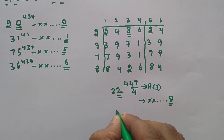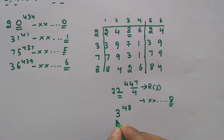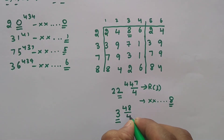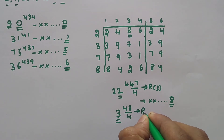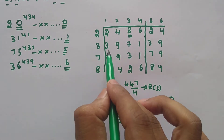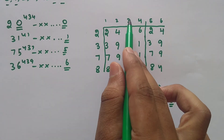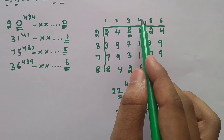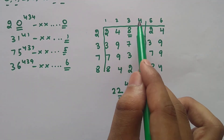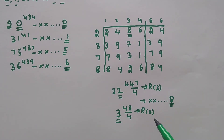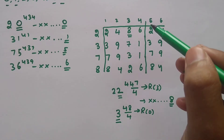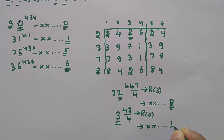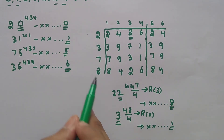Next example: 3 power 48. The last digit is 3 and the cyclicity is 4, so divide the last two digits of the power by 4: 48 ÷ 4 gives remainder 0. When remainder is 1 the last digit is 3; remainder 2 gives 9; remainder 3 gives 7; and remainder 0 means look at 3 power 4, which ends in 1. So the last digit of 3 power 48 is 1. The same process applies for 7 and 8.